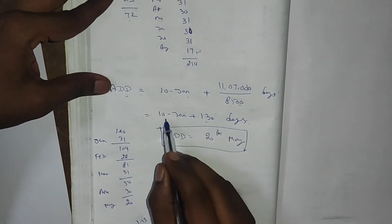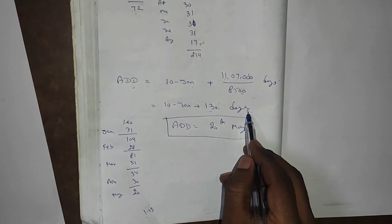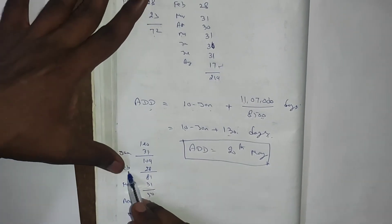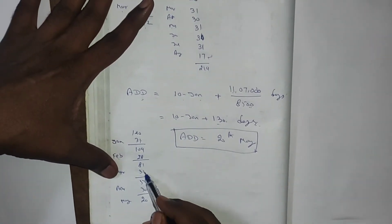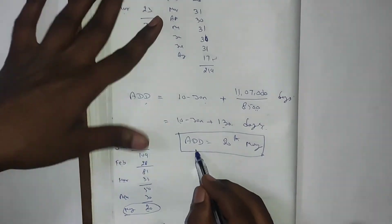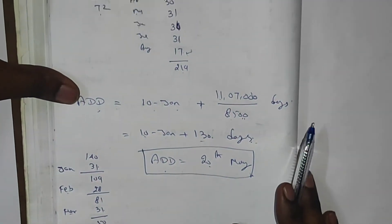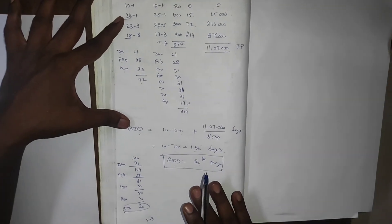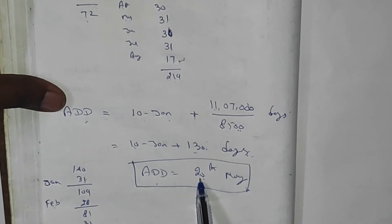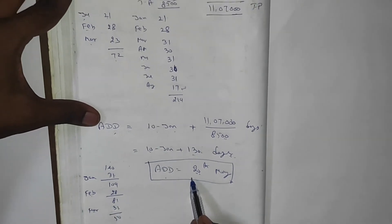Total product is 11,07,000 and total amount is 8,500, giving 130 days. Add 130 days to 10th January: 130 + 10 = 140 days. Subtract January 31, February 28, March 31, April 30 — remaining is 20. So the Average Due Date is 20th May. If you pay ₹8,500 on 20th May, no interest or discount applies. Pay beyond this date and you pay interest; pay earlier and you receive a discount (rebate).